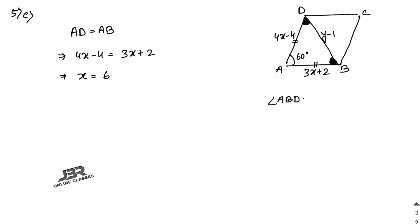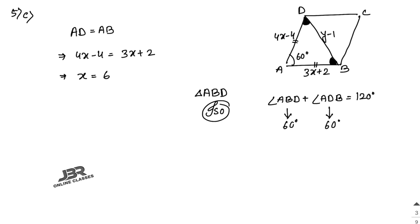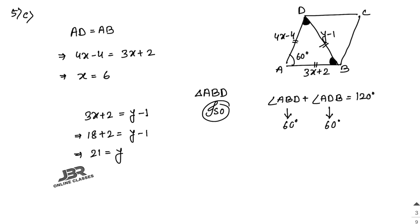Since AB = AD, triangle ABD is isosceles. With angle BAD = 60° and the base angles equal, each base angle is also 60°. So all three angles are 60°, making triangle ABD equilateral. Therefore AB = BD = AD, giving: 3x + 2 = y − 1. With x = 6: 18 + 2 = y − 1, so y = 21.